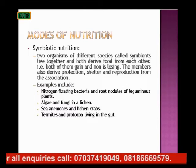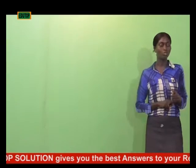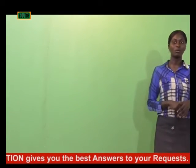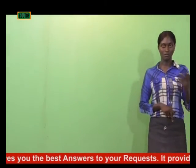Termites and protozoa living in the gut are also examples of symbionts. Another mode of nutrition is carnivorous or insectivorous feeding.